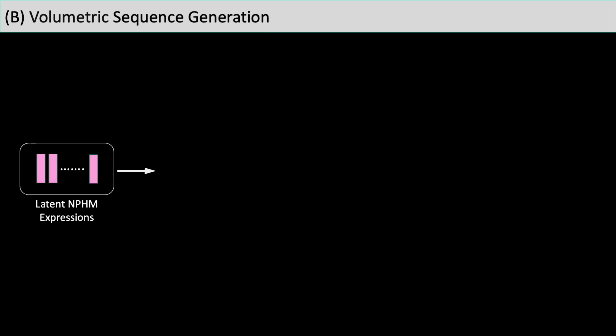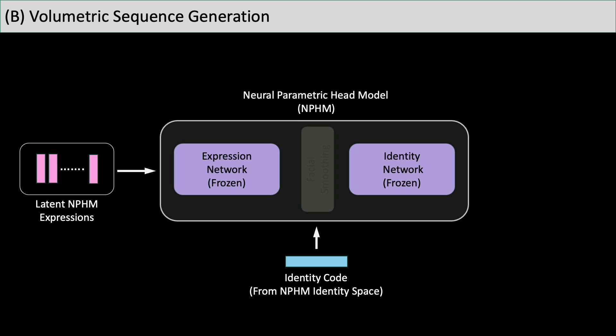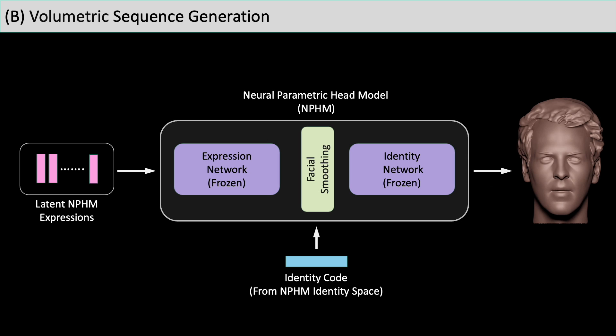Given the expression codes generated from our model, we can pair them with random identities to produce realistic volumetric head animation.